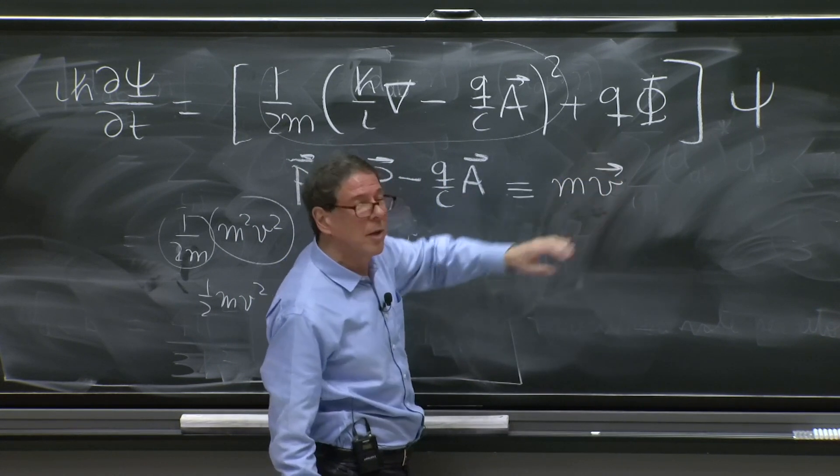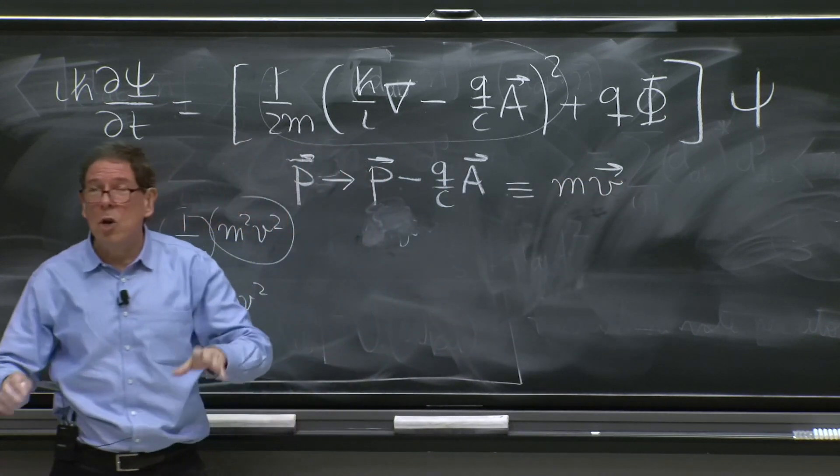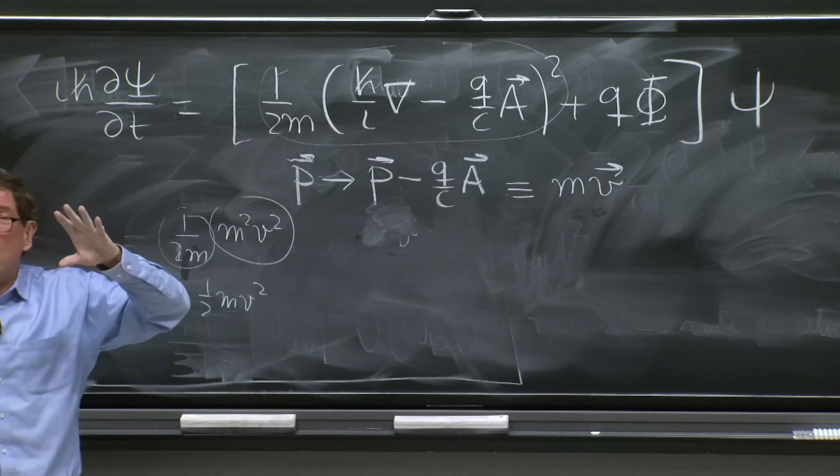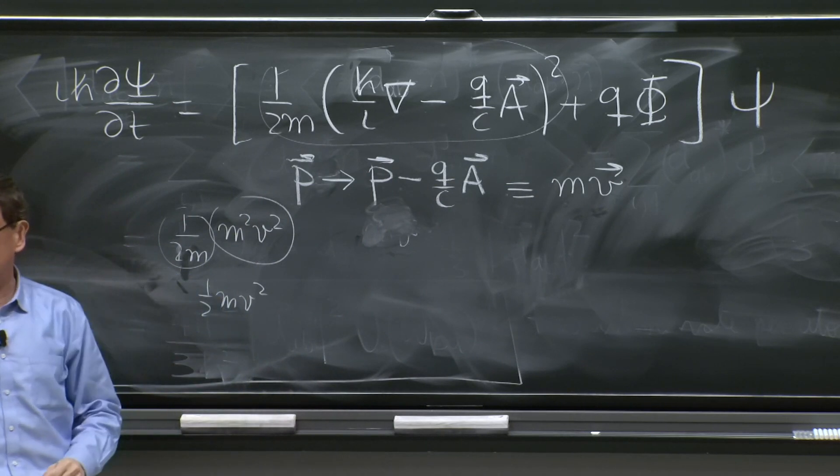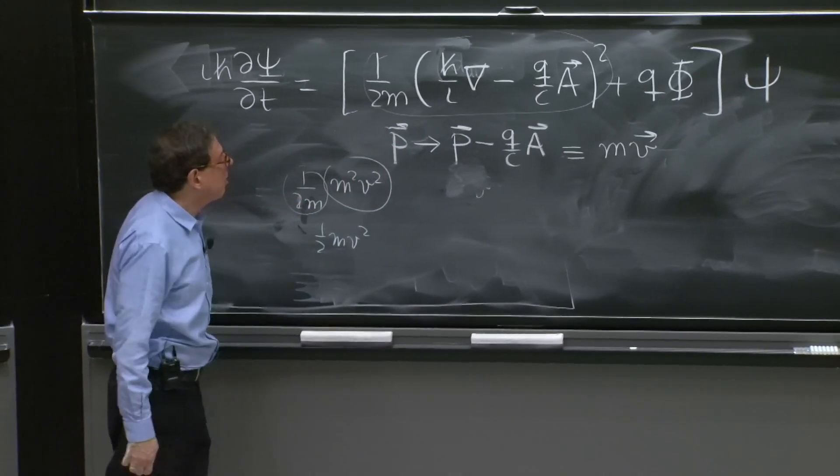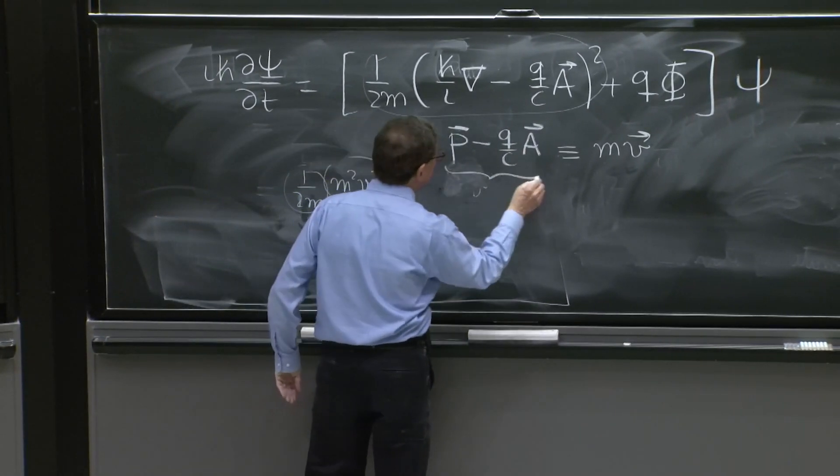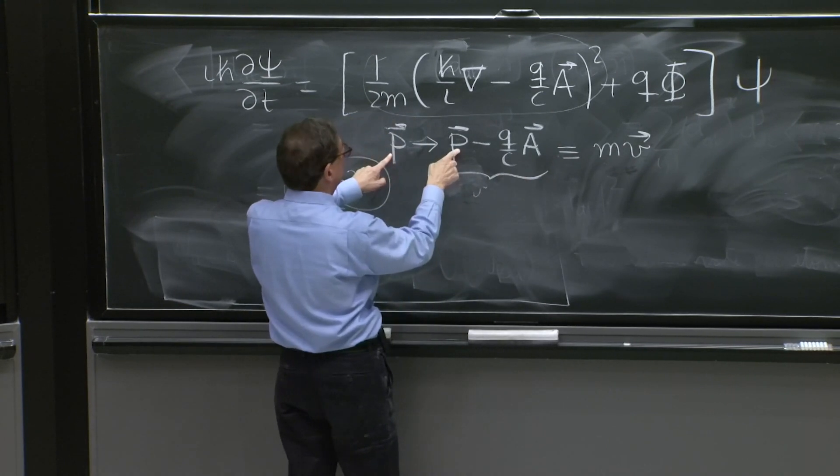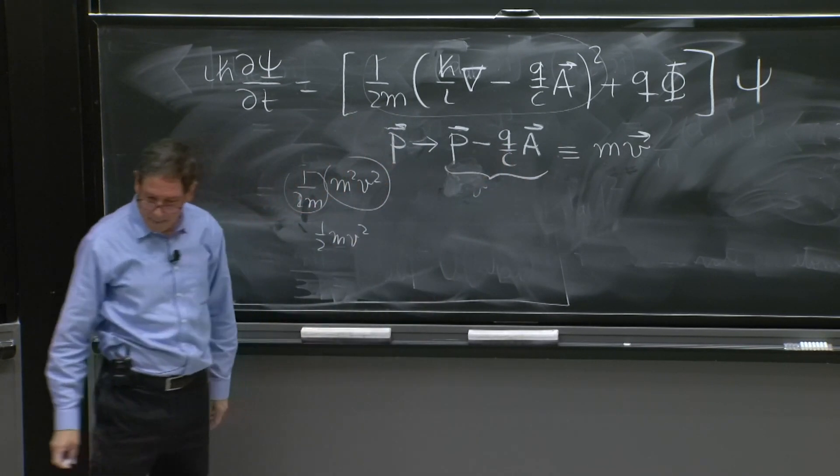This operator, this Heisenberg equation of motion, is going to look like the Lorentz force equation. So it will be reasonable to think of this like that. This operator is nicer than the operator p, as we will see for many reasons.